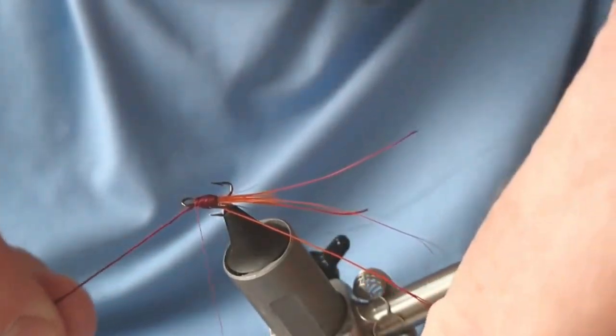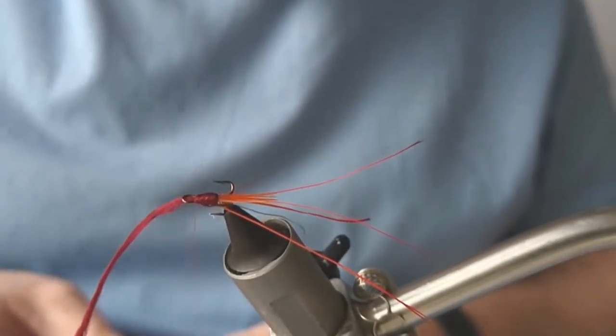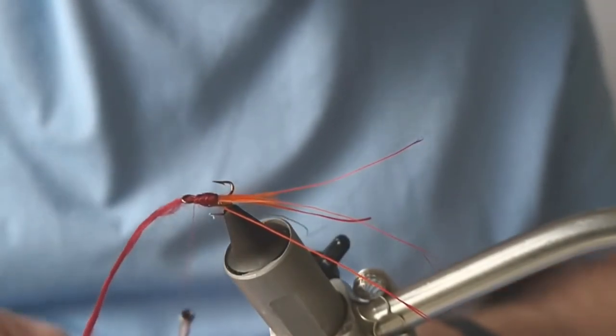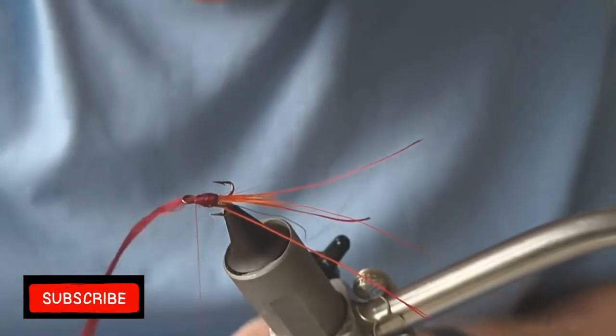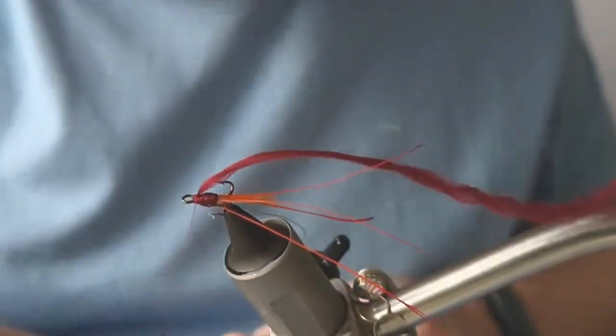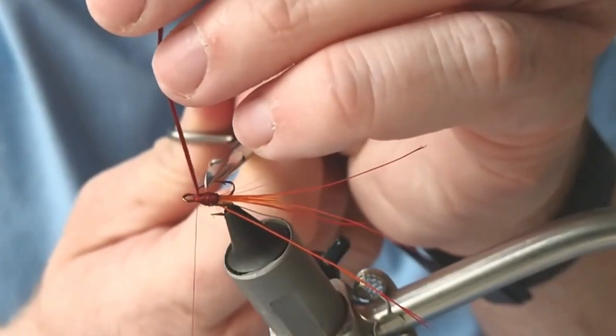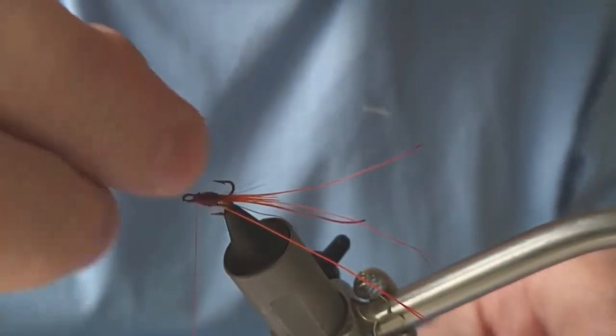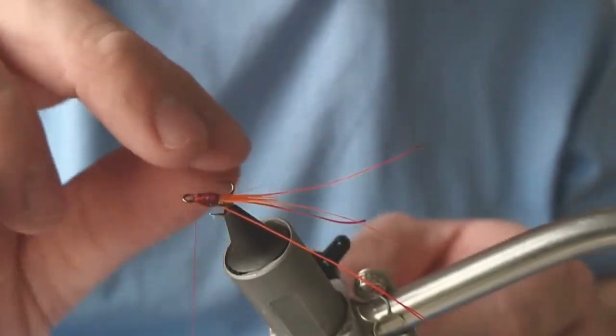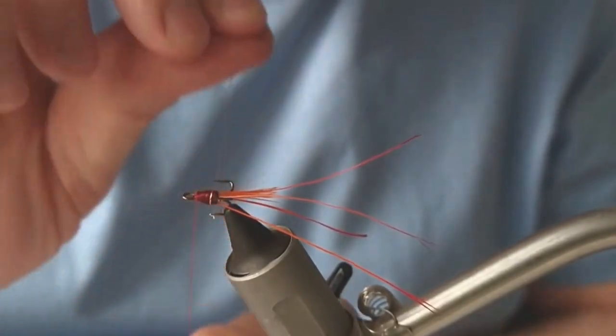Secure down a couple of times. And then the last thing I need to do is just add our rib. You're only going to get two or three turns of this.